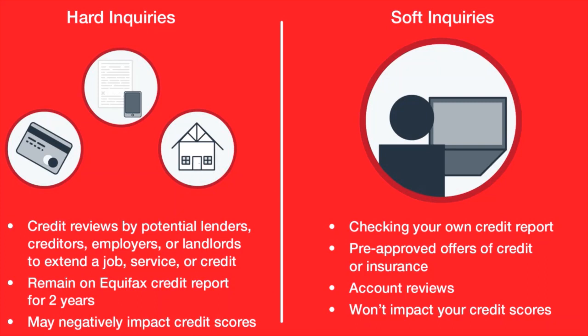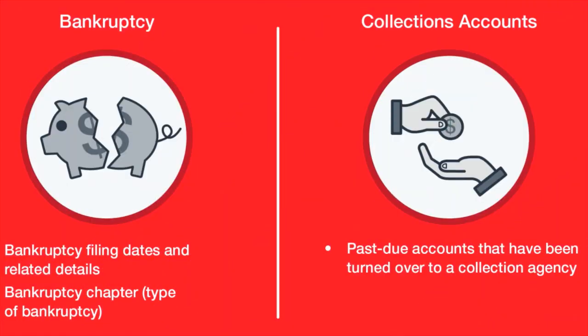Although the impact may lessen with time. Lenders will also pay attention to bankruptcies — your Equifax credit report contains information about bankruptcy, public records, and related details such as the filing date and chapter type. There are also collection accounts, which include past due accounts turned over to a collection agency, including accounts with doctors, hospitals, banks, retail stores, cable companies, or mobile phone providers. You may also want to check your Equifax credit report if you're planning a big purchase such as a car or a home, as doing so can help you understand what lenders and creditors may see when you apply for credit.